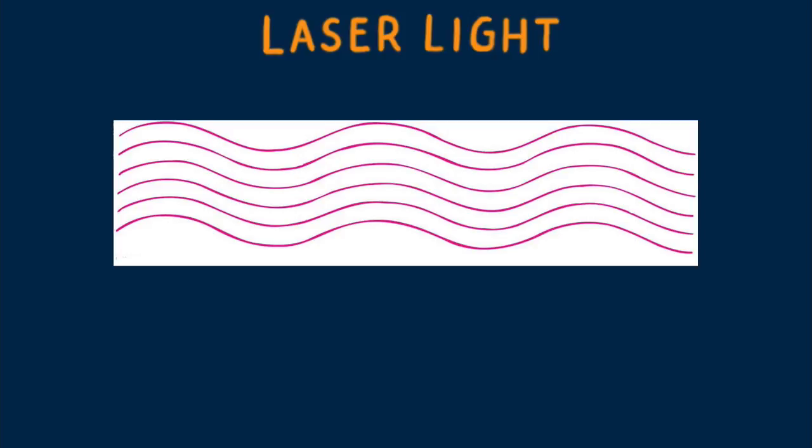Photons in the beam are identical copies of one another. This is the light a laser emits, a beam of coherent light that spreads very little and weakens very little.